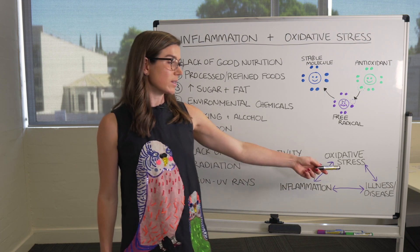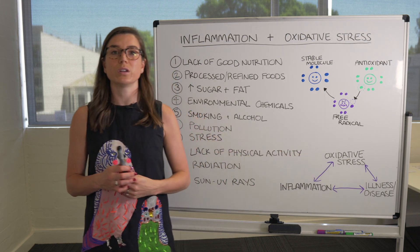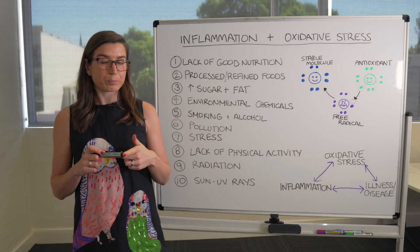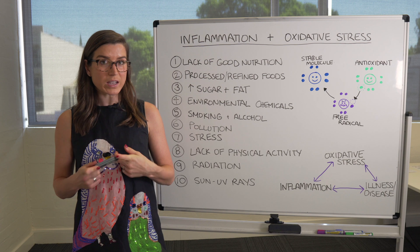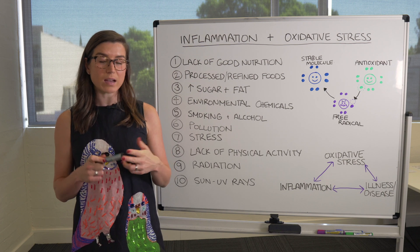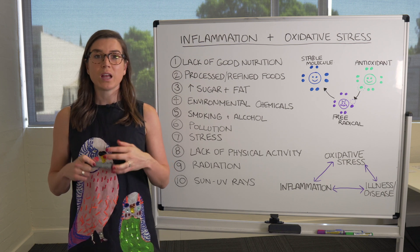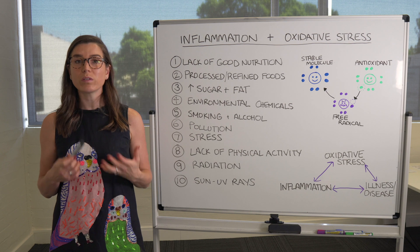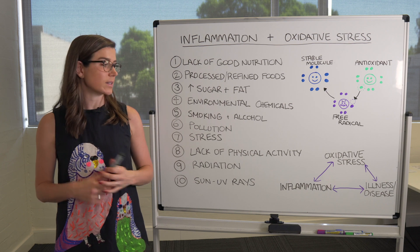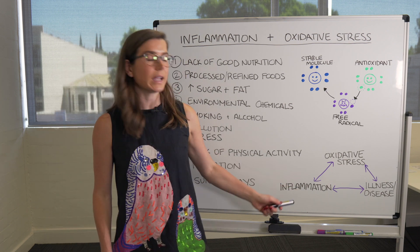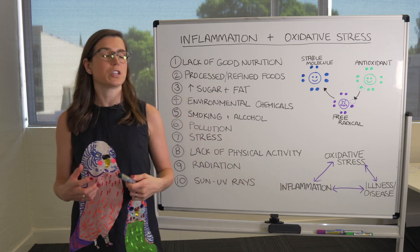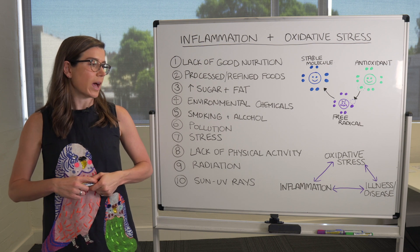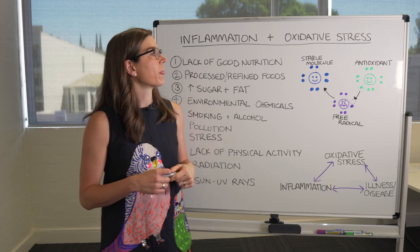These diseases include type 2 diabetes, cardiovascular disease, Alzheimer's disease, depression — there are tons. Basically all of these chronic diseases have this underlying inflammation and oxidative stress type of pathology.